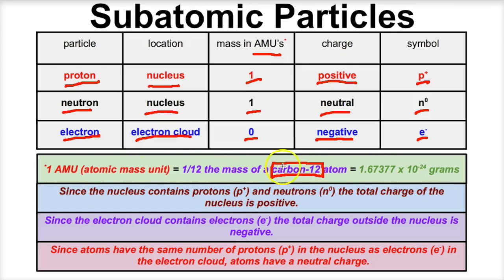An atomic mass unit is super small — it's hardly any mass at all. An electron has such a small mass compared to protons and neutrons that we say they have no mass at all.